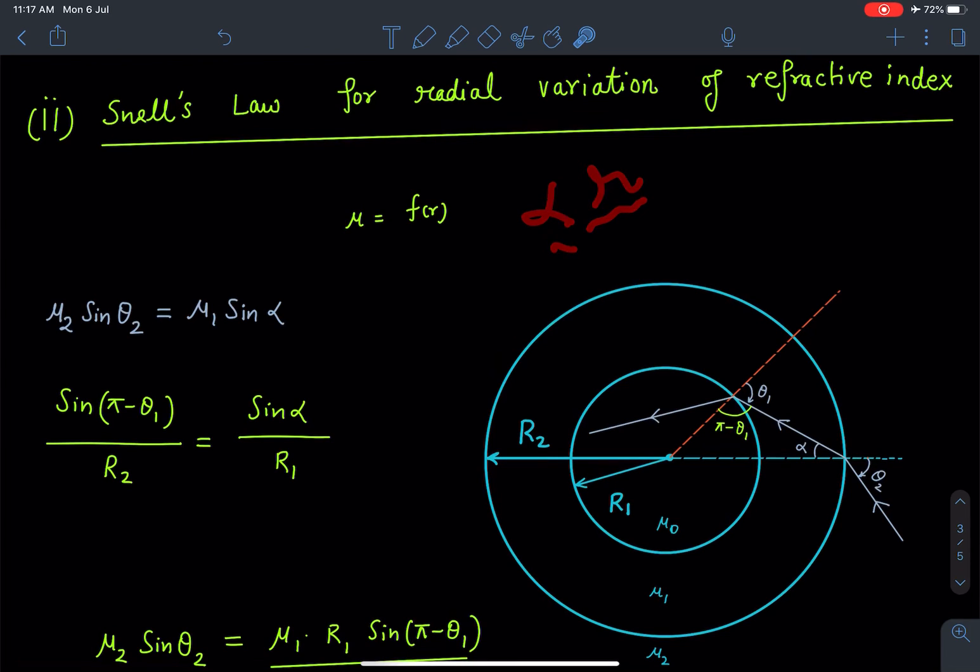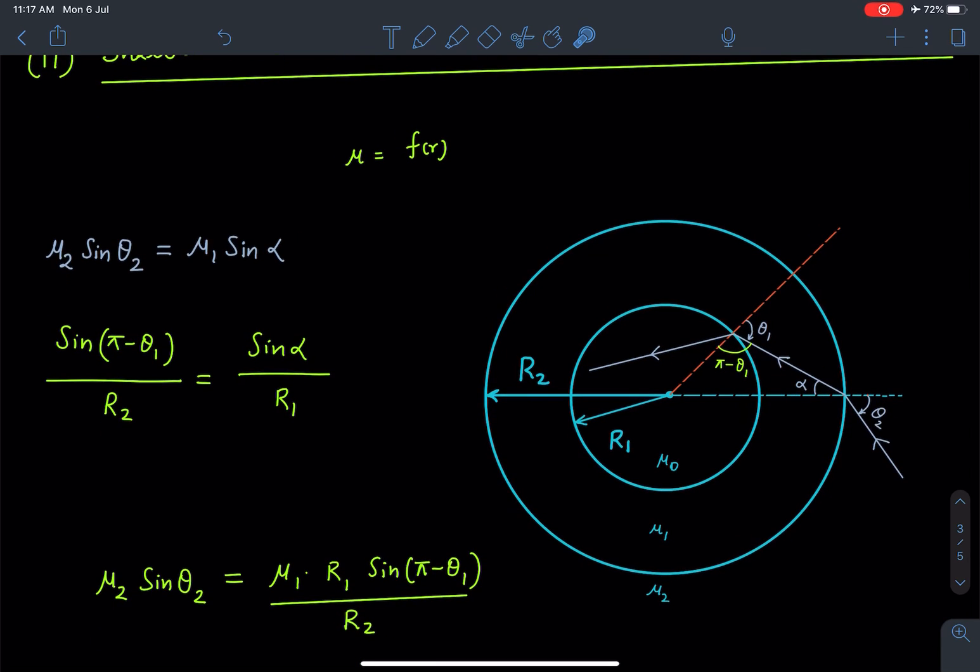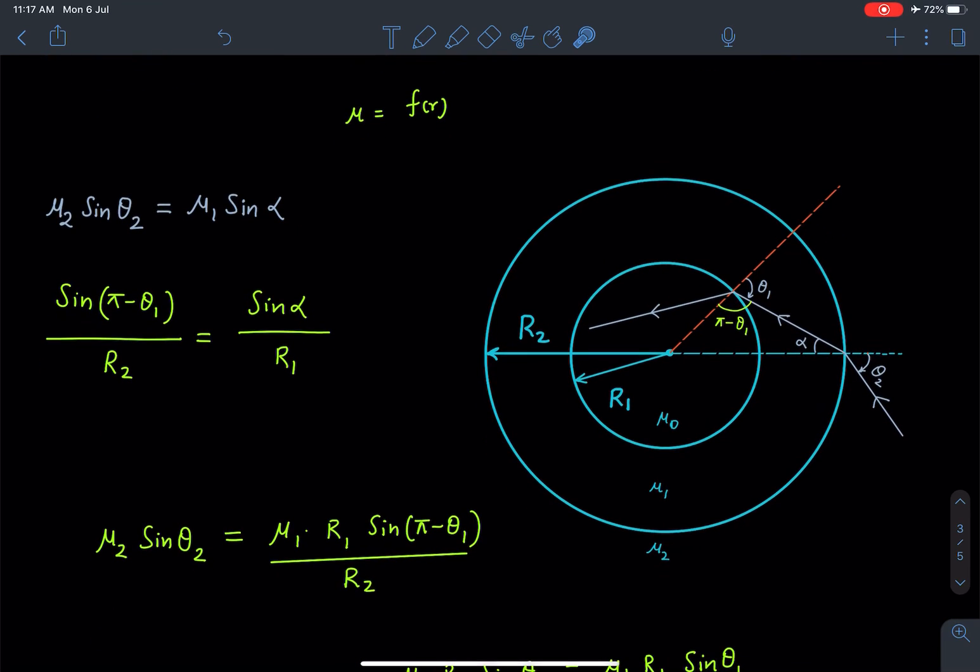As you can see in the diagram, I am taking two concentric spheres of radius r₁ and r₂, separating mediums μ₀, μ₁, and μ₂. One light ray making angle θ₂ here in medium 2 is entering into this sphere.